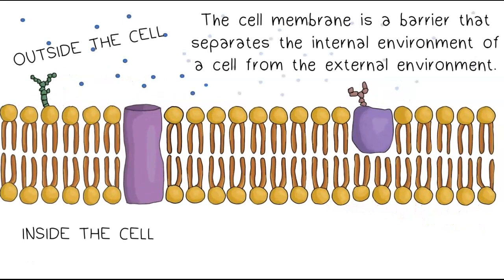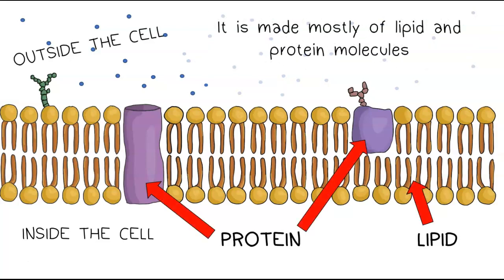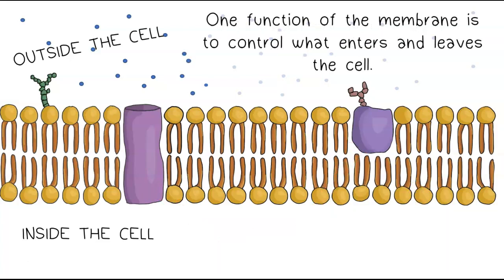The cell membrane is a barrier that separates the internal environment of a cell from the external environment. It is made mostly of lipid and protein molecules. One function of the membrane is to control what enters and leaves the cell.